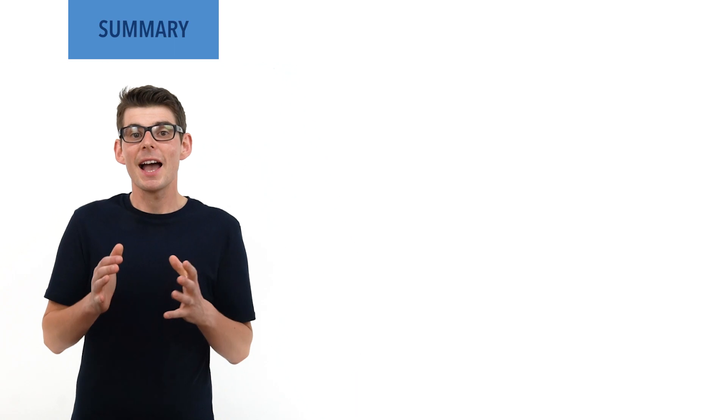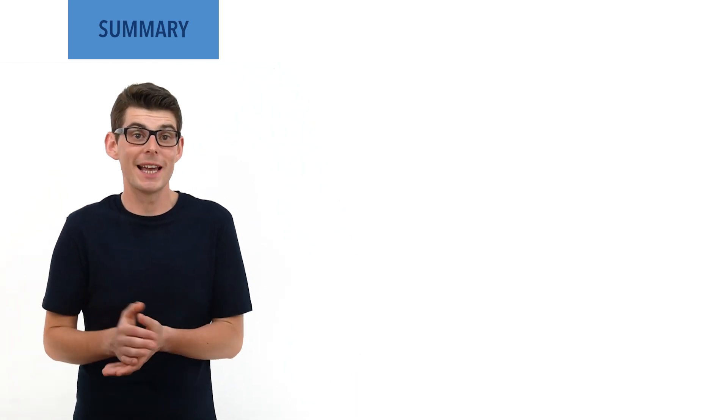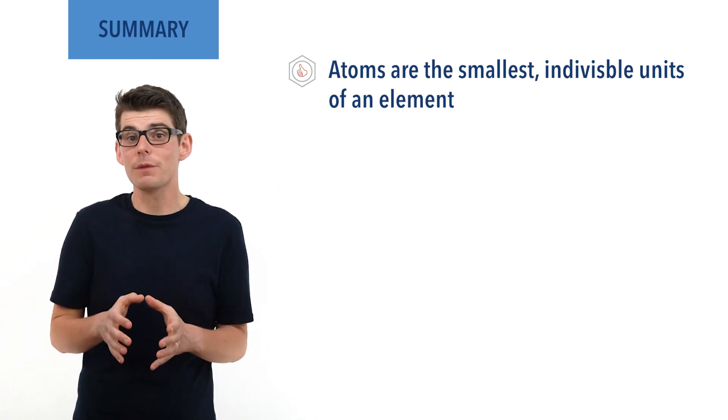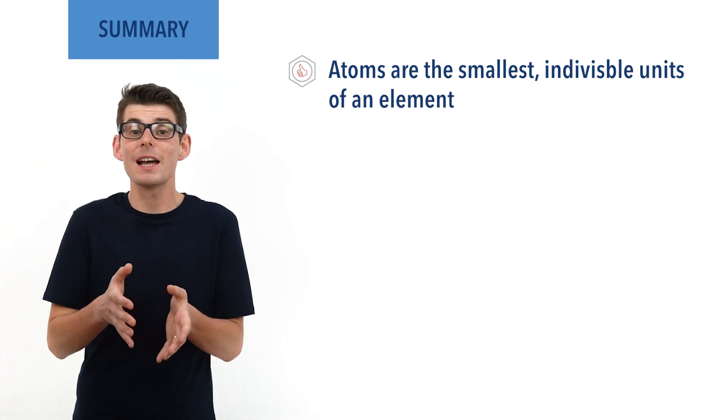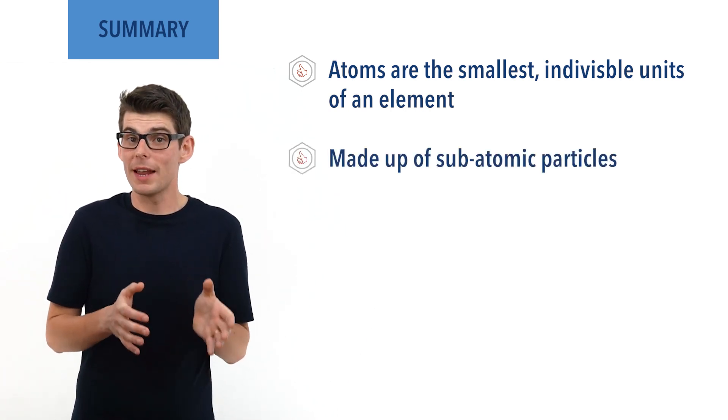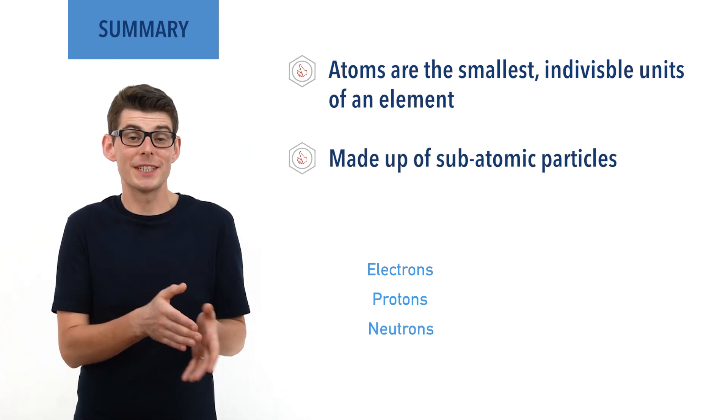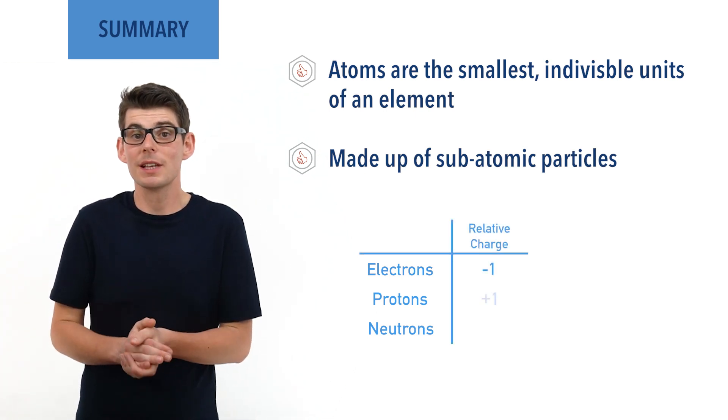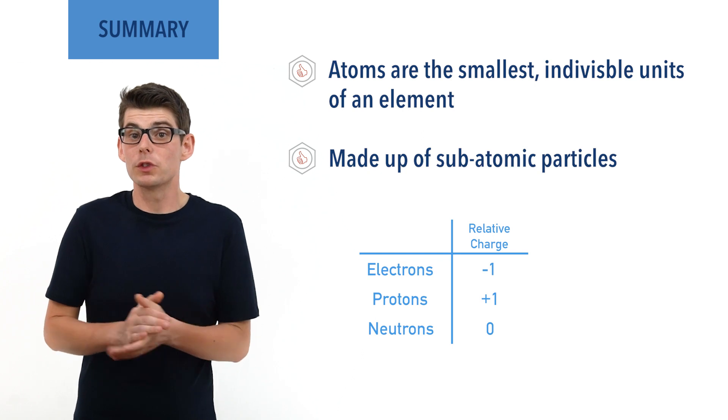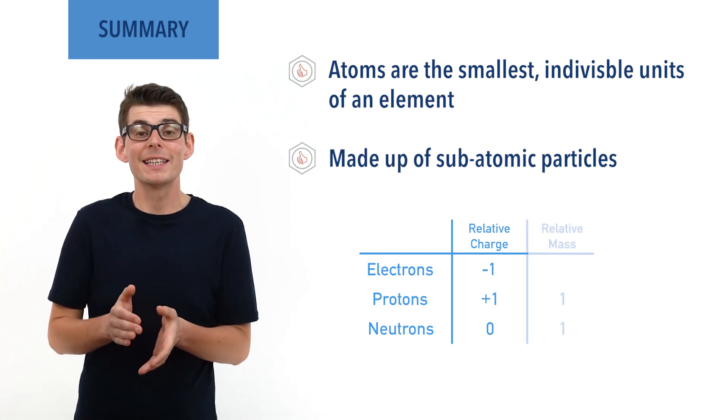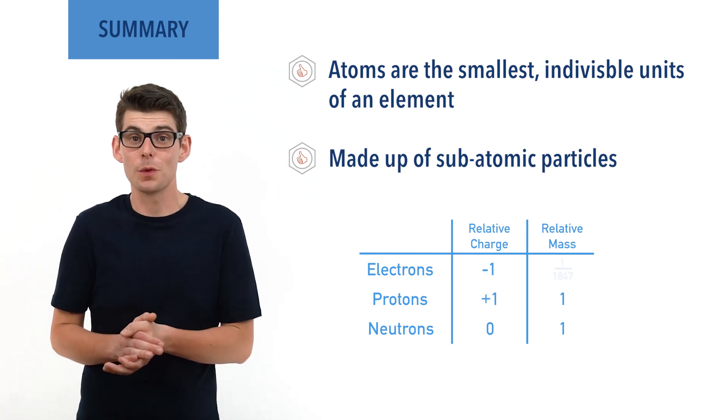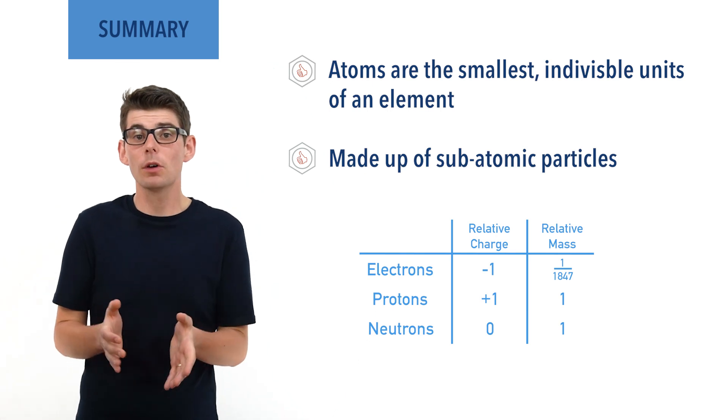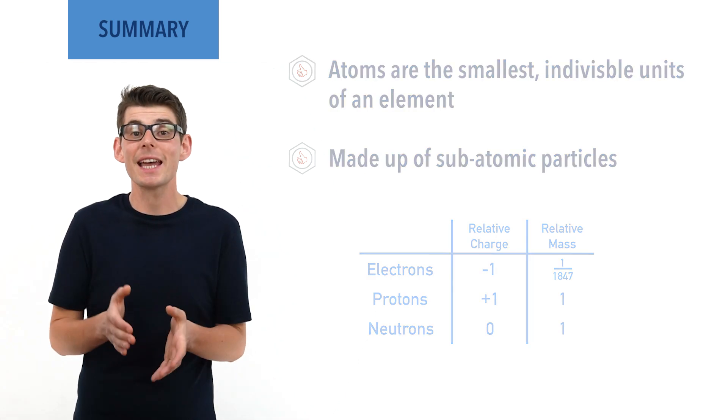So to summarize, atoms are the smallest indivisible units of an element. Our understanding of atoms has changed significantly over time, and it was discovered that atoms contain smaller particles, now called subatomic particles. These are electrons, protons, and neutrons, discovered in that order. Electrons have a relative charge of 1 minus, protons 1 plus, and neutrons 0. Protons and neutrons both have a relative mass of 1, and electrons 1 over 1,840. Relative charge and mass is used to make comparisons easier.